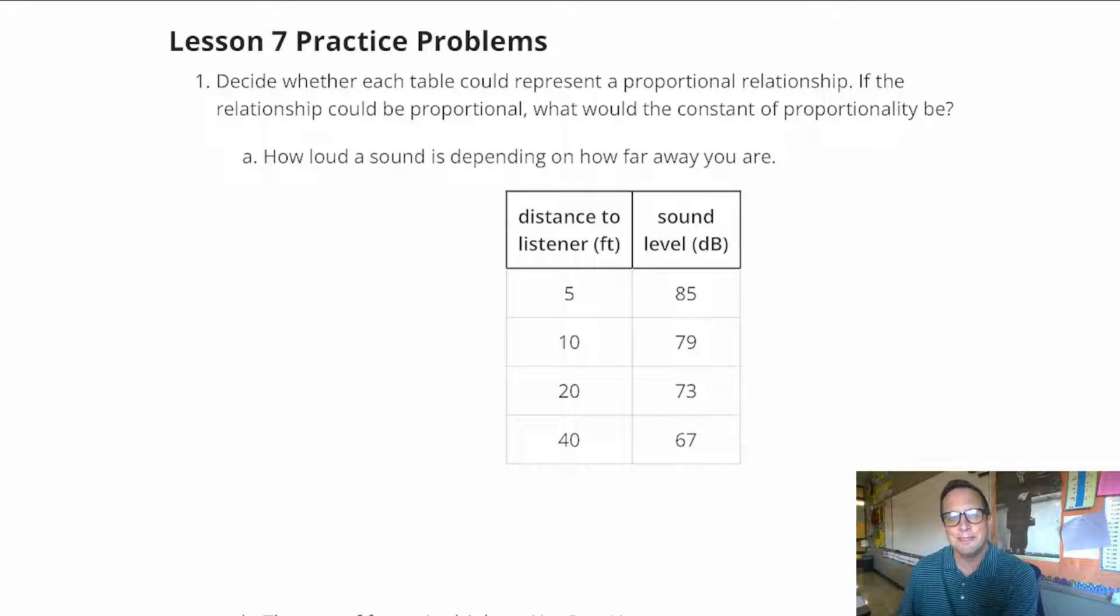Okay, let's go ahead and start on Lesson 7 Practice Problems. For number one, we have decide whether each table could represent a proportional relationship. If the relationship could be proportional, what would be the constant of proportionality?